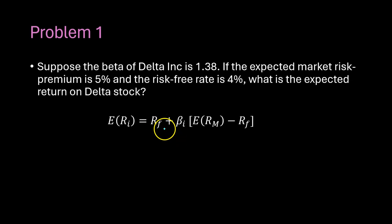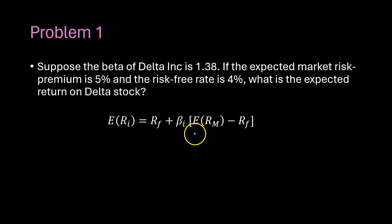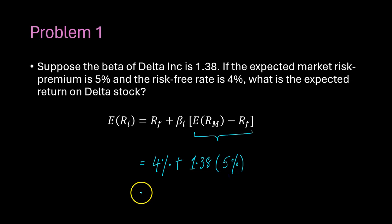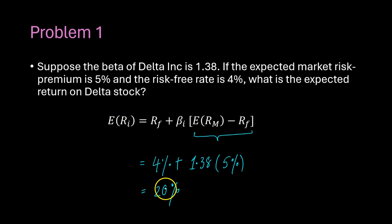If the Capital Asset Pricing Model holds, it would simply say that the expected return on Delta stock equals the risk-free rate plus the beta of Delta stock times the expected market risk premium. We have all the inputs: the risk-free rate is 4%, the beta is 1.38, and the expected market risk premium is 5%. If you do this math, you will find that the expected return comes out to 13% — wait, 4% plus 1.38 times 5% equals 10.9%, approximately. So that is the expected return on Delta stock.